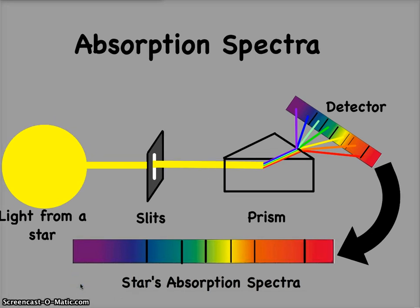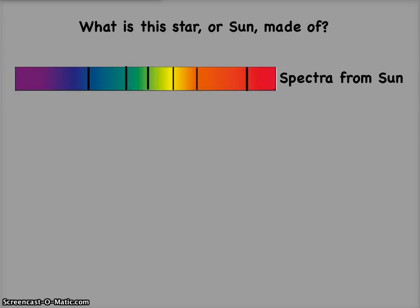So next we can use this information to find out what a star is made out of. Let's see how that's done. Let's take our star's absorption spectra that we got from our Sun or our star.